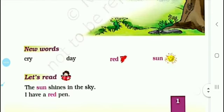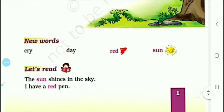The next topic is 'Let's Read'. You have to read these two sentences. The first sentence is: 'The sun shines in the sky' — suraj jo hai aakaas mein chamakta hai. And the second one is: 'I have a red pen' — mere paas ek red pen hai.